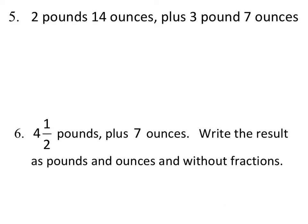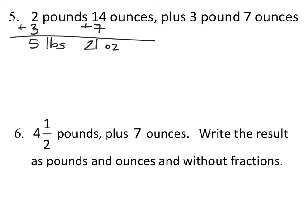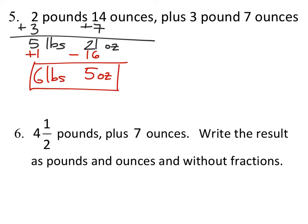Same idea with pounds and ounces: 2 pounds 14 ounces plus 3 pounds 7 ounces gives us 5 pounds and 21 ounces. Since 16 ounces equals one pound, we take off 16 of those 21 ounces and add a pound, ending up with 6 pounds and 5 ounces. You can write out 'pounds' or use 'lbs' — either is fine.